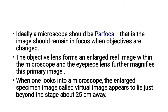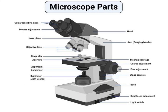The objective lens forms an enlarged real image within the microscope, and the eyepiece lens further magnifies the primary image. When one looks into a microscope, the enlarged specimen image — called the virtual image — appears to lie just beyond the stage, about 25 cm away. These are the main parts of the bright field microscope.